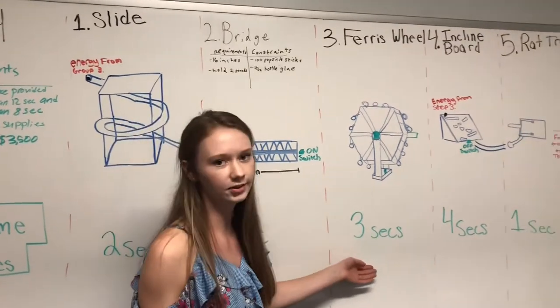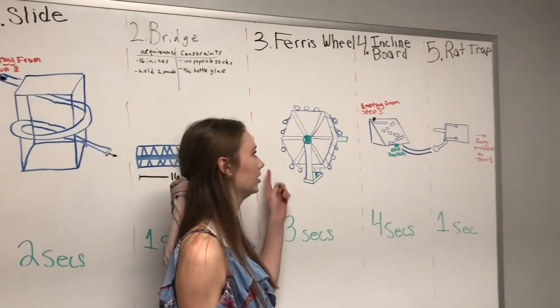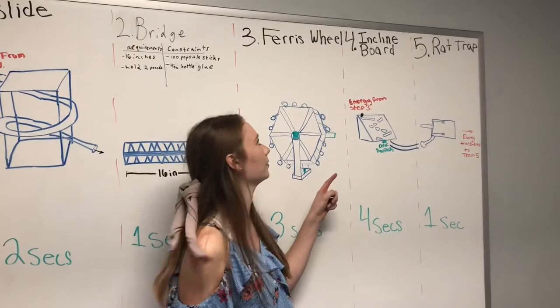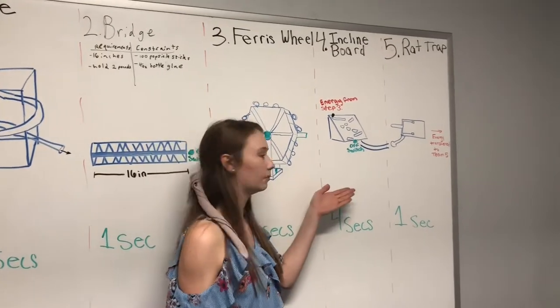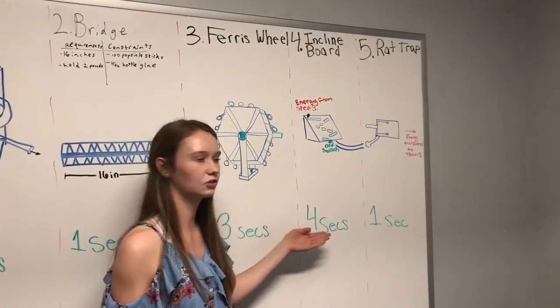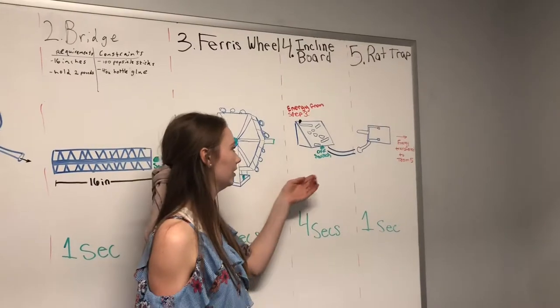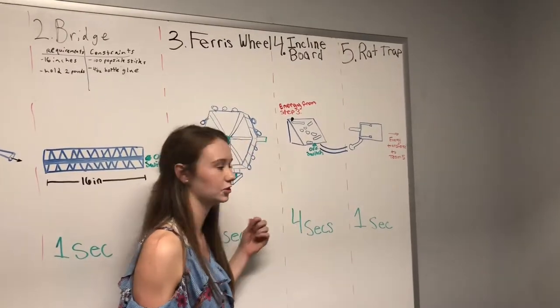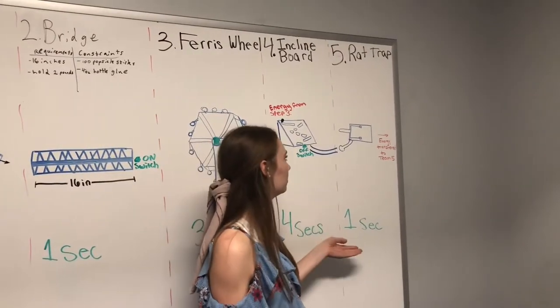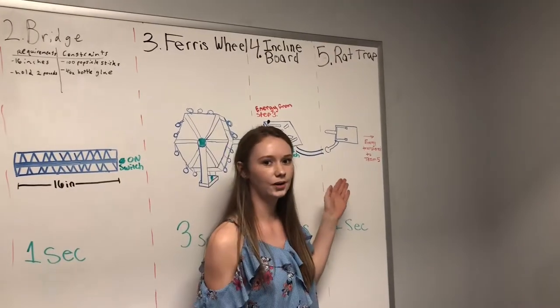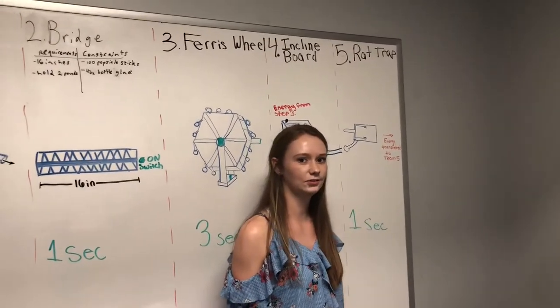And it will take 3 seconds for the Ferris wheel to initiate energy into Step 4. The ball will then take 4 seconds to travel down the incline board and turn off the switch. And it will take 1 second for the rat trap to initiate energy to Group 5.